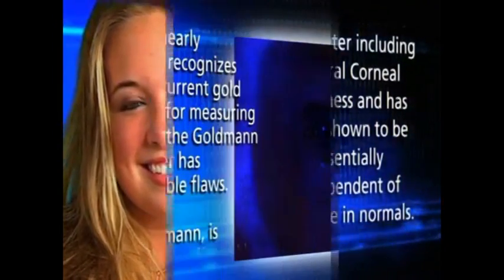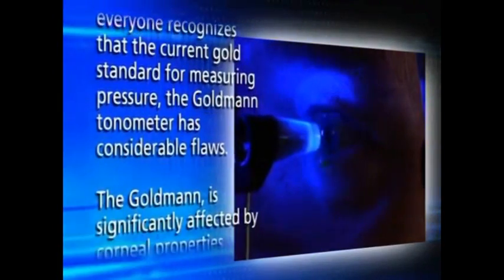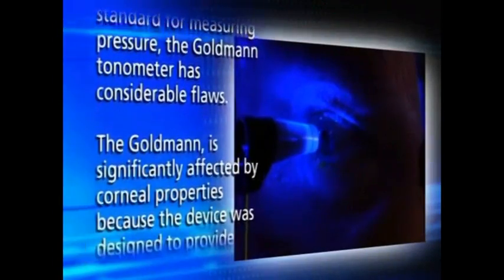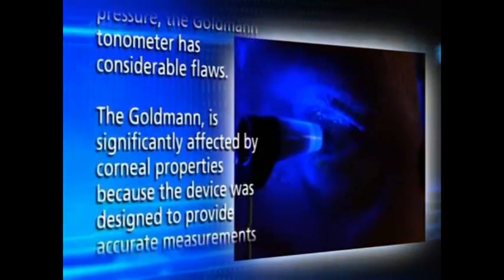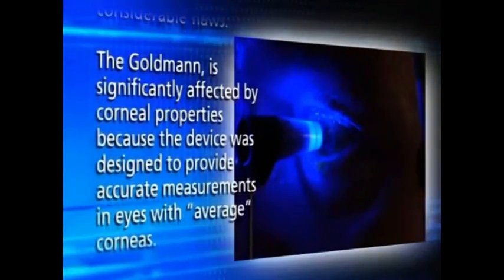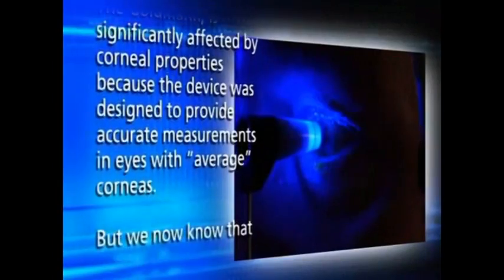By now, nearly everyone recognizes that the current gold standard for measuring pressure, the Goldmann tonometer, has considerable flaws. The Goldmann is significantly affected by corneal properties because the device was designed to provide accurate measurements in eyes with average corneas.